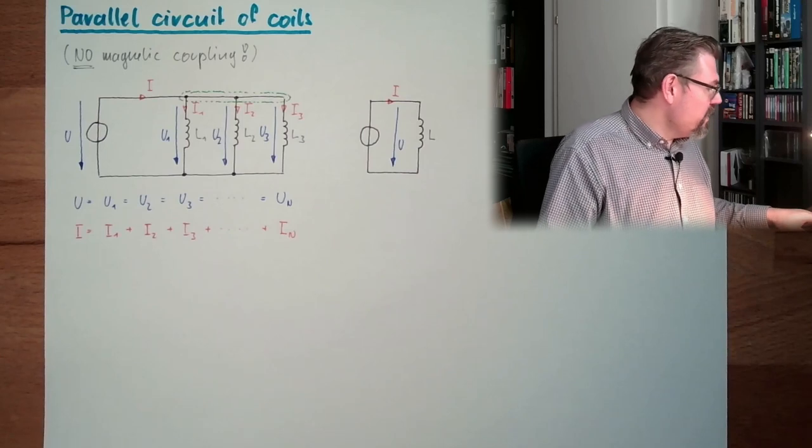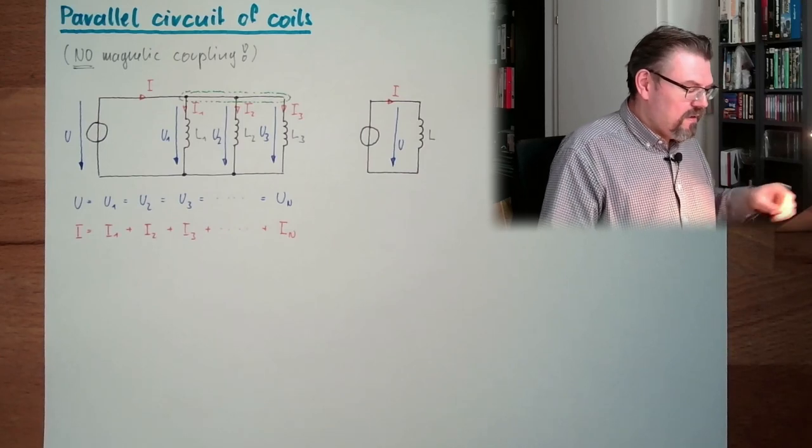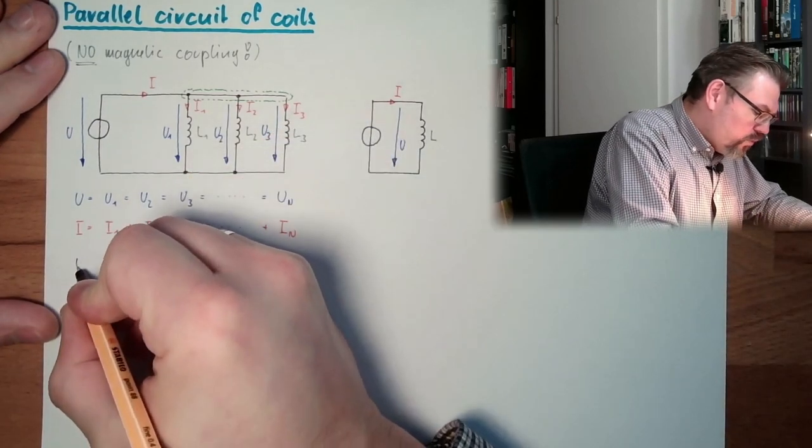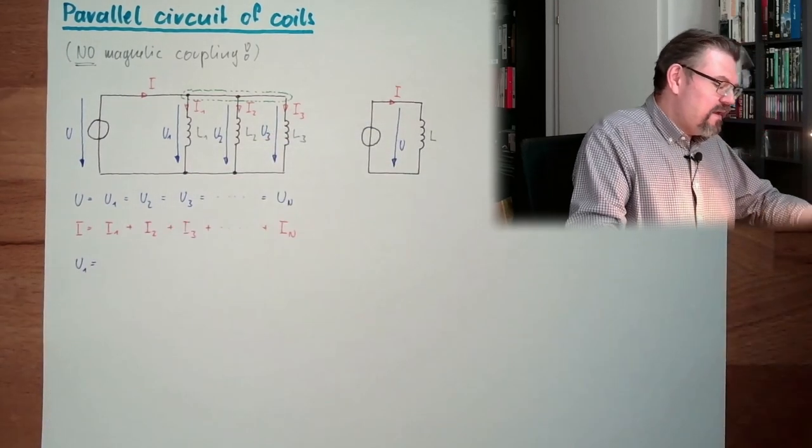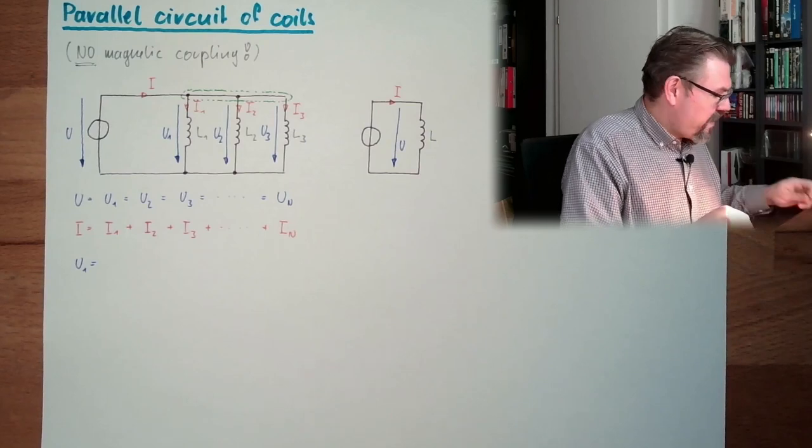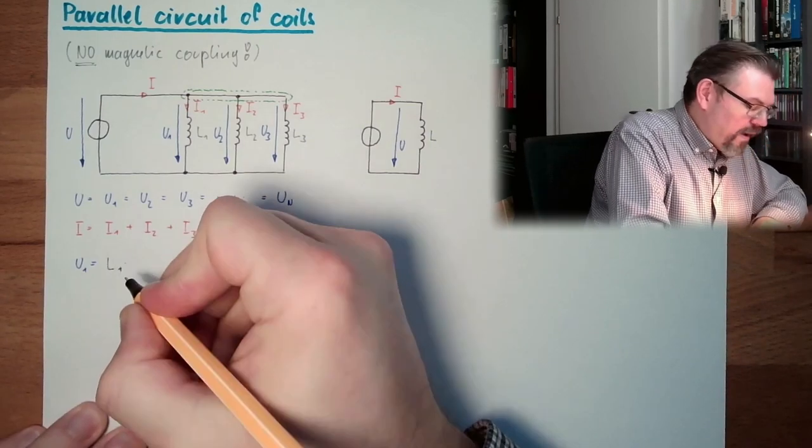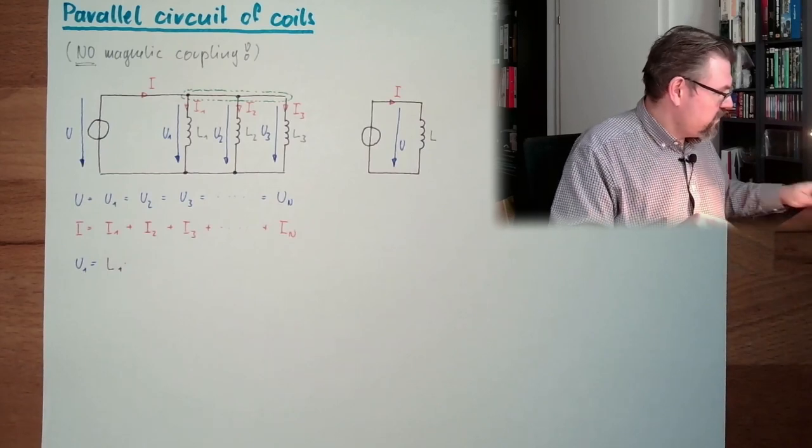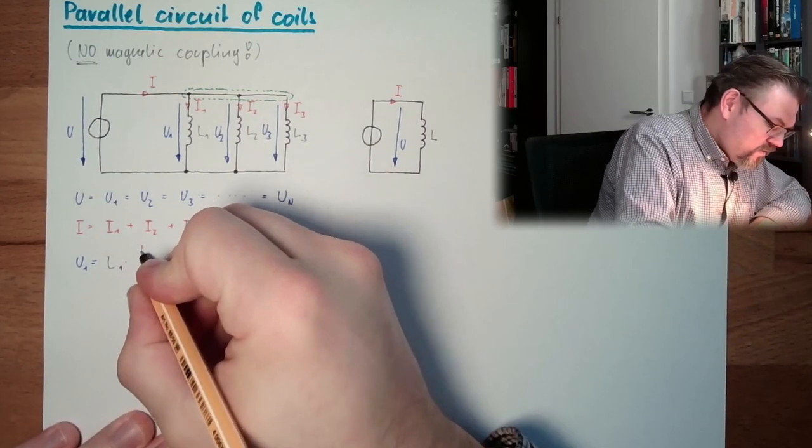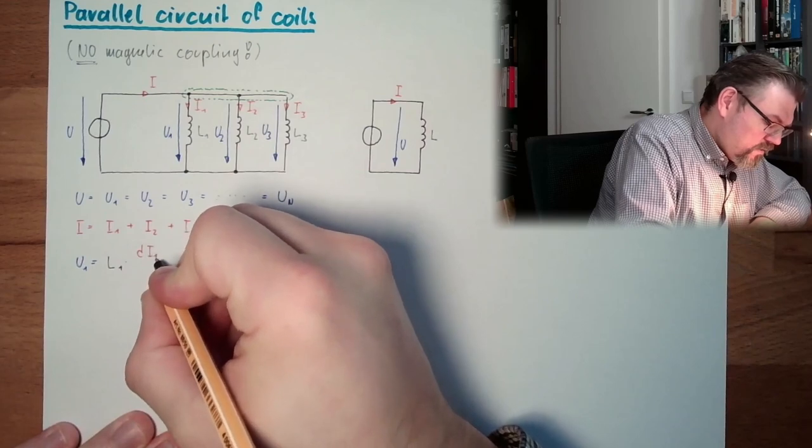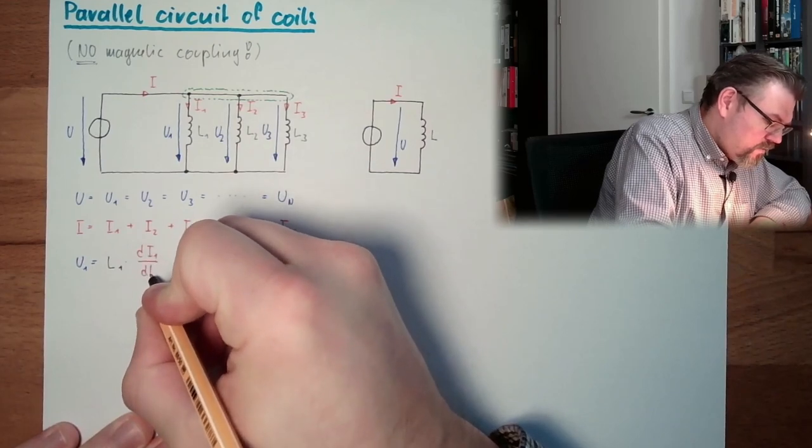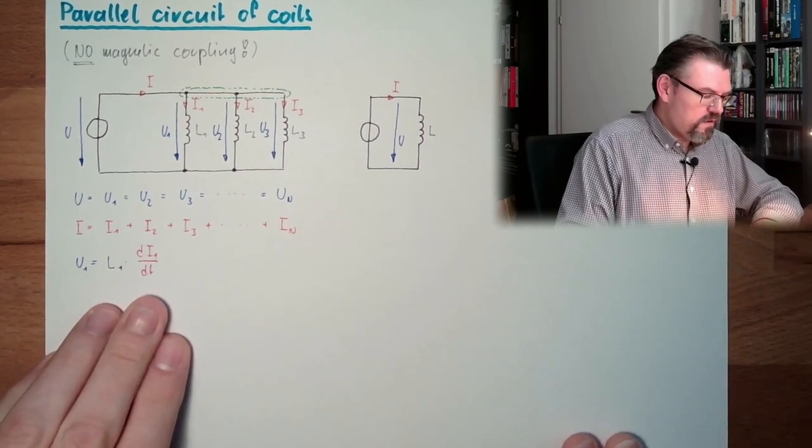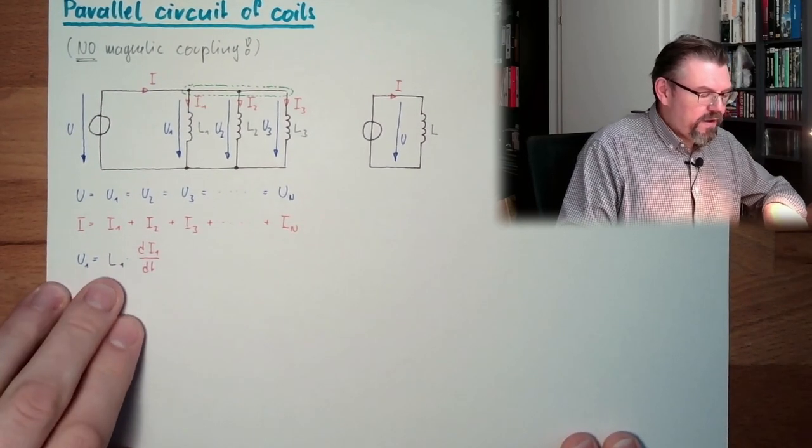And we know at a coil that our voltage U1 equals L1 multiplied by the change rate of the current. That was this. This was the change rate of the current multiplied by L.